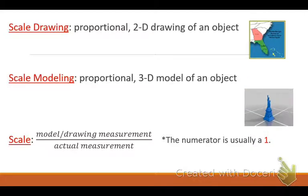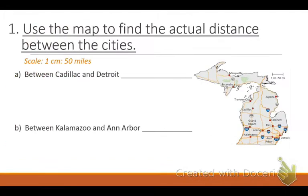So today I'm going to talk to you about a scale. It's the model or the drawing measurement — the little tiny amount over the actual measurement. The numerator is usually a 1. Go ahead and put that into your notes. Repeat after me: model over actual. The scale is always going to be the model, the tiny thing, over the actual size, and then we can figure out what the actual size would be. You should have your rulers there with you. On your ruler there's two sides — one side is centimeters and one side is inches. You are going to be using the centimeter side.